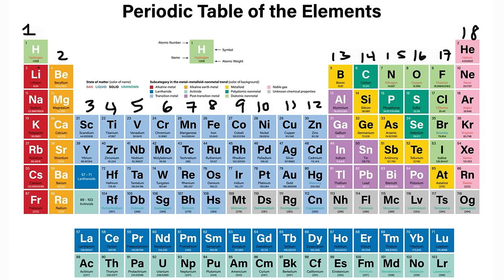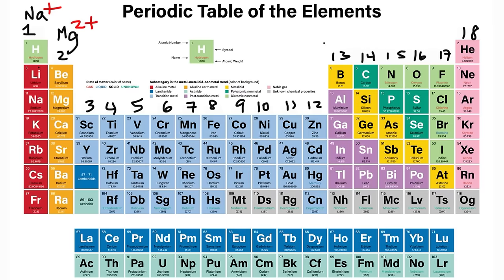The elements in group 1, the alkali metals, like to form cations with a +1 charge because they only have one valence electron to give away. The alkaline earth metals have two valence electrons; when they give up those two, they form a cation with a +2 charge — so we have ions like Mg²⁺. Aluminum, in group 3A (group 13), will form a +3 ion.